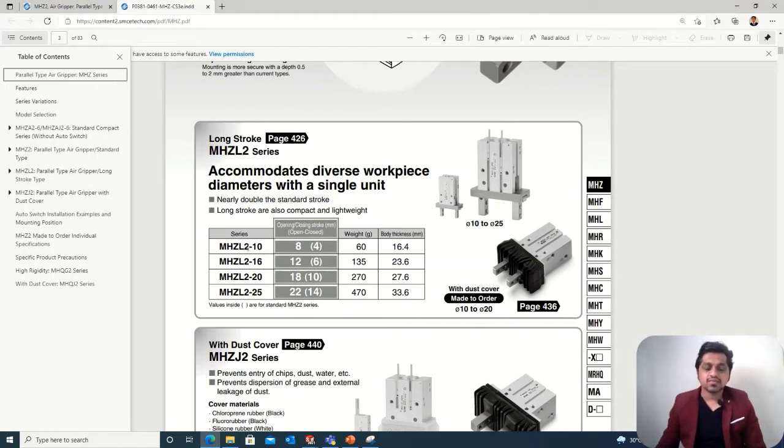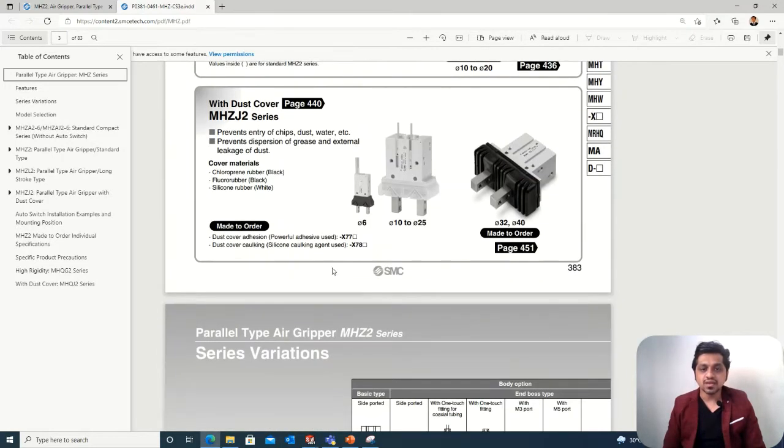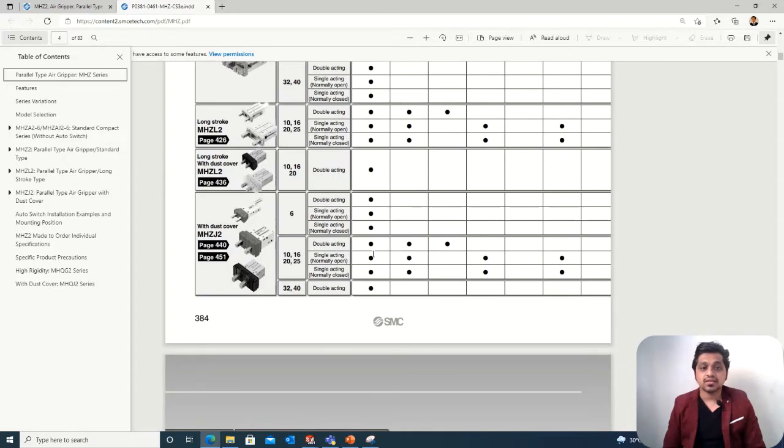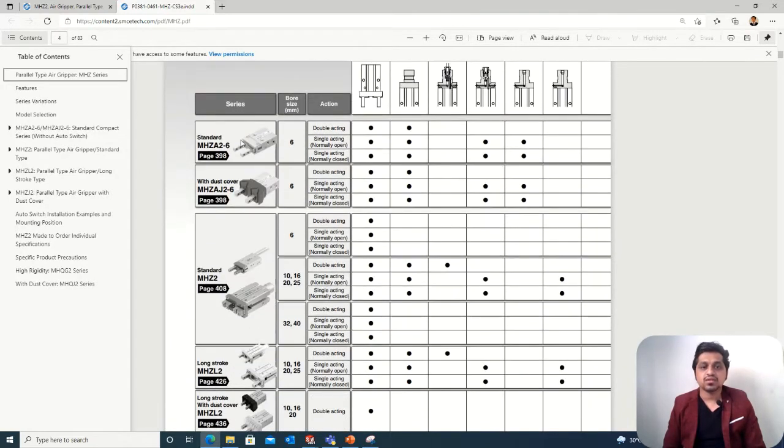They've mentioned the strokes here - what the stroke will be. This essentially indicates the distance when the gripper is closed or opened. There will be movement of the gripper, so that's how they've mentioned the distance and other specifications with the series type, like J type.